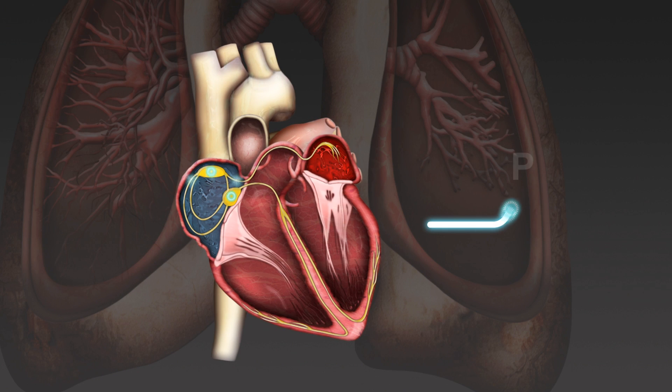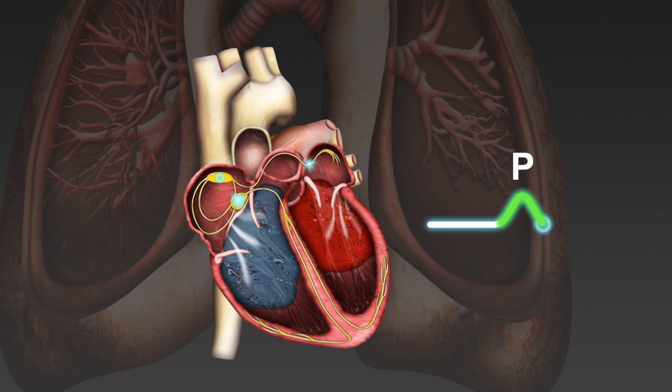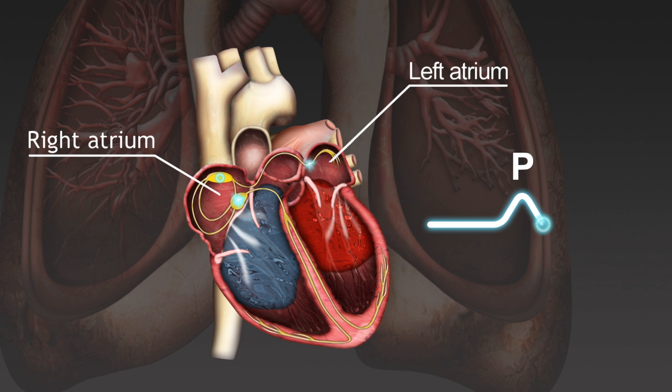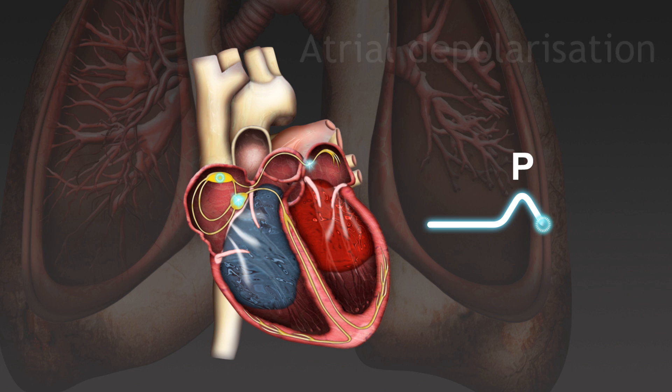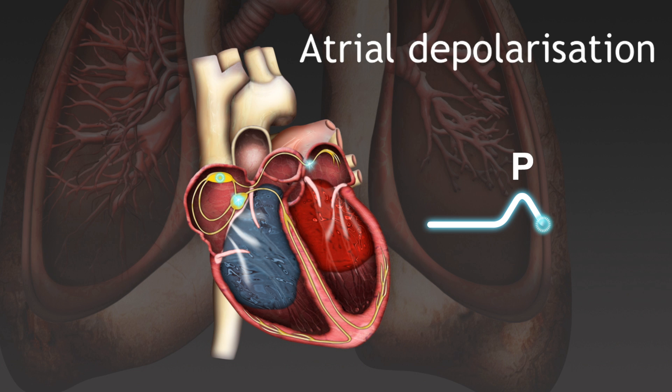The P wave is produced as the electrical impulse travels through the atria, causing them to contract. The P wave corresponds to atrial depolarisation.